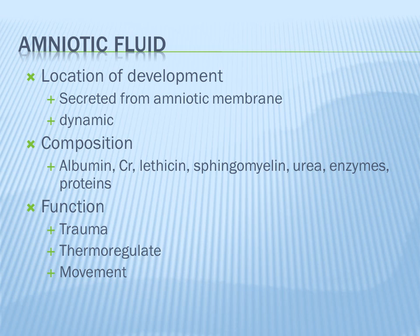Two terms to know: oligohydramnios is when there's less amniotic fluid than needed, leading to limb fusion, hypoplastic lungs, and clubbing of feet or hands. Polyhydramnios is when there's more amniotic fluid than needed, and is a predisposing risk for cord prolapse and is also associated with esophageal atresia.